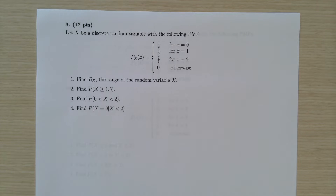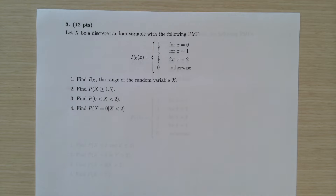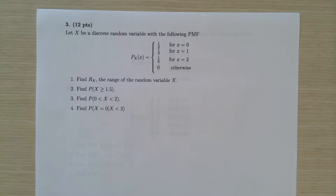Okay, let us continue. Let x be a discrete random variable with the following PMF. So it has small parts. Part 1: find the range. Part 2: find P(x ≥ 1.5). Part 3: find P(0 < x < 2). Part 4: okay.